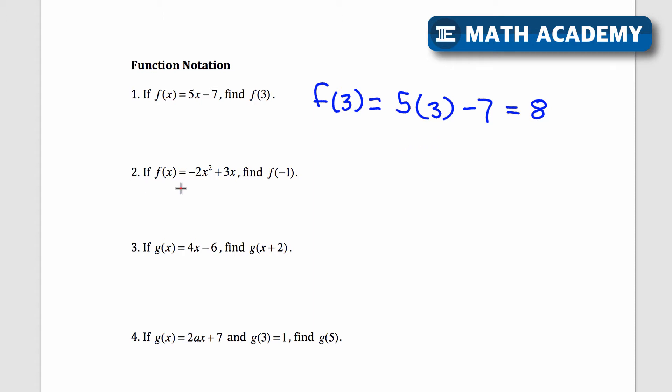If f of x equals negative 2x squared plus 3x, find f of negative 1. So now I'm inputting negative 1 into the input into x here. So I'll just say f of negative 1 is equal to negative 2 times negative 1 squared plus 3 times negative 1. So in place of both x's, I put negative 1. And again, I use those parenthesis.